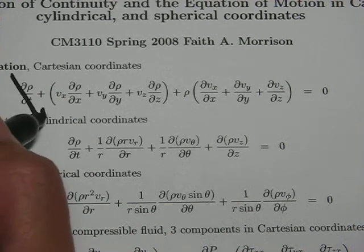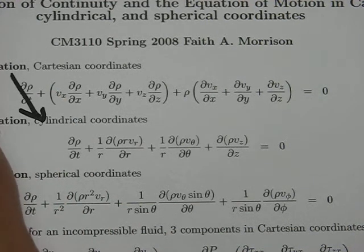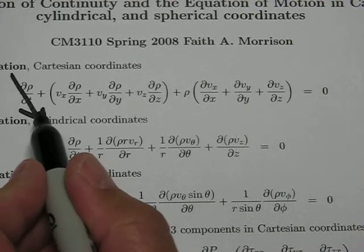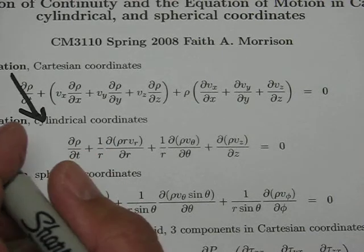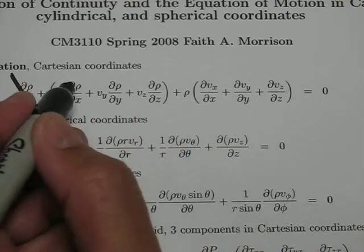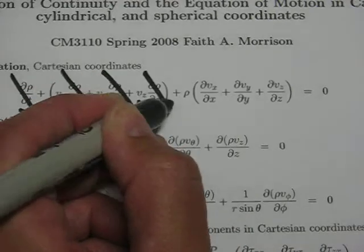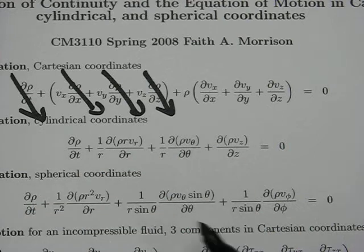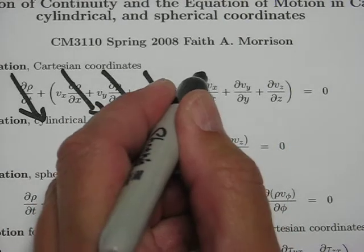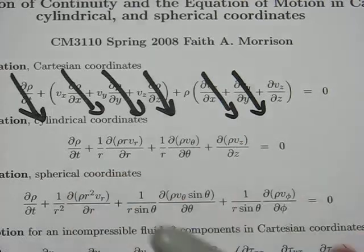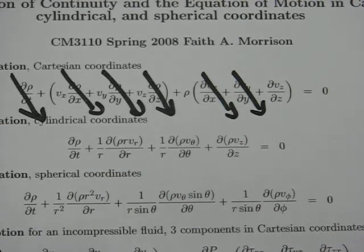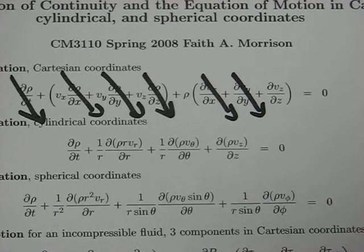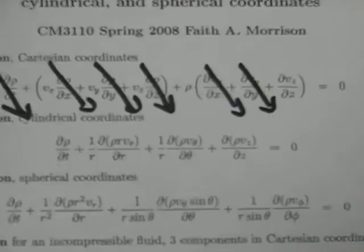And we can simplify this equation by using those facts that are related to our problem. We have a steady state problem that tells us that the time derivatives of anything are zero. We have an incompressible fluid, so the density does not change, and all of these terms have density derivatives in them. And in addition, we know that vx is zero and vy is zero.